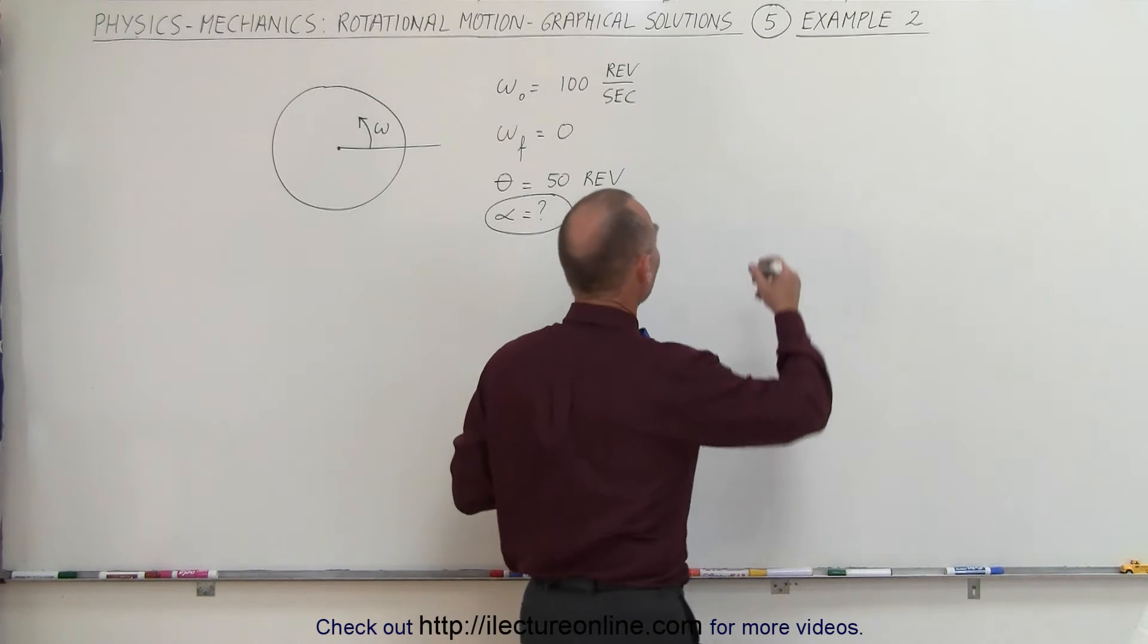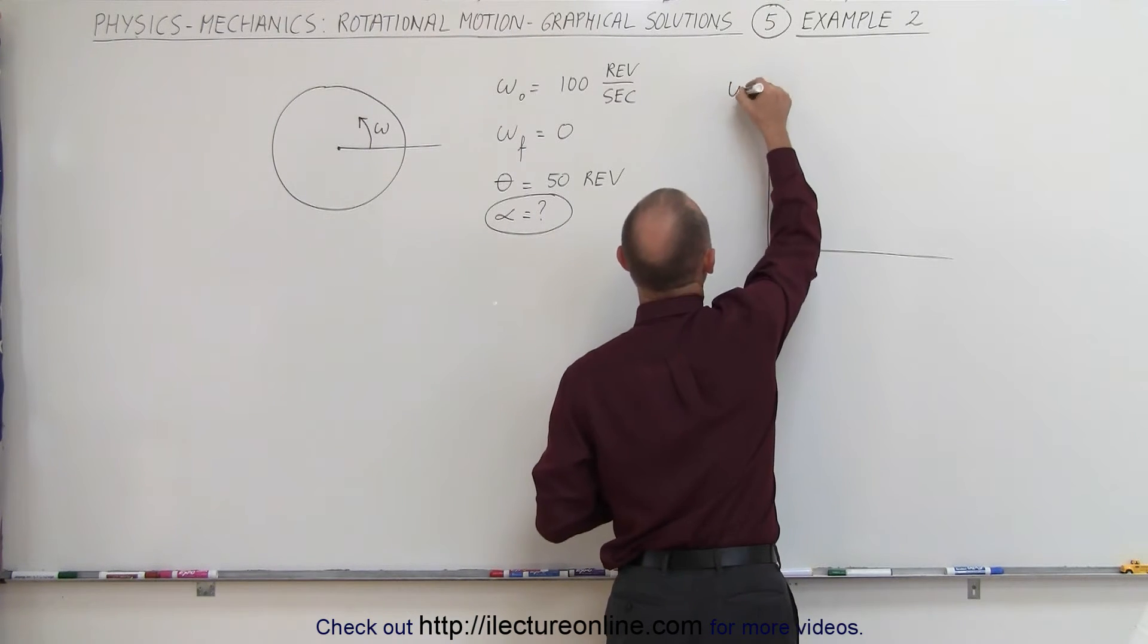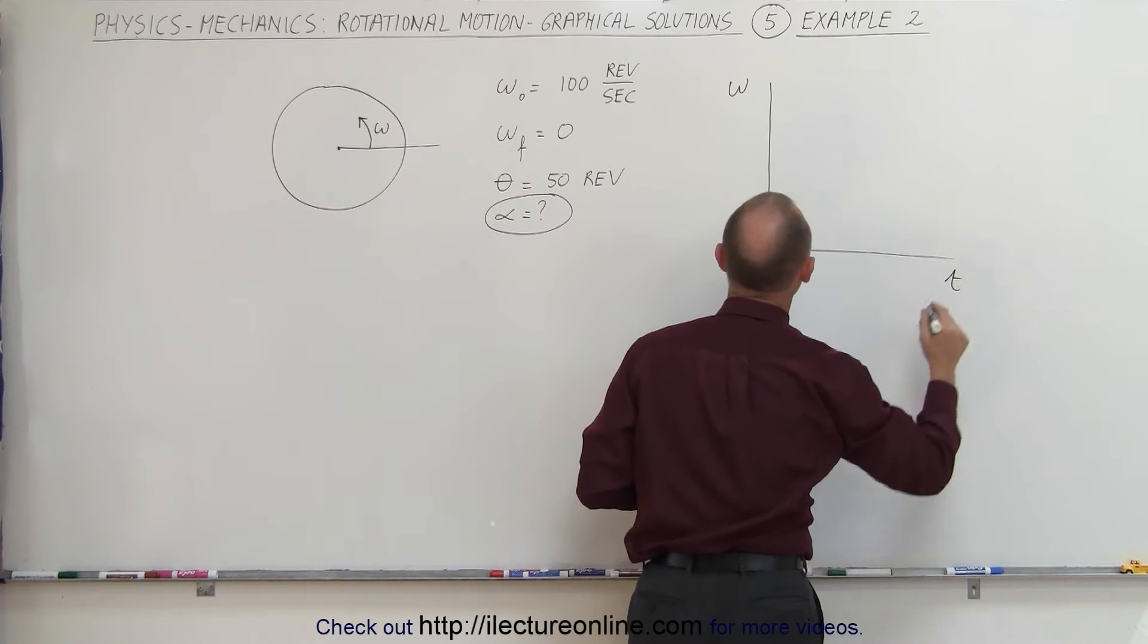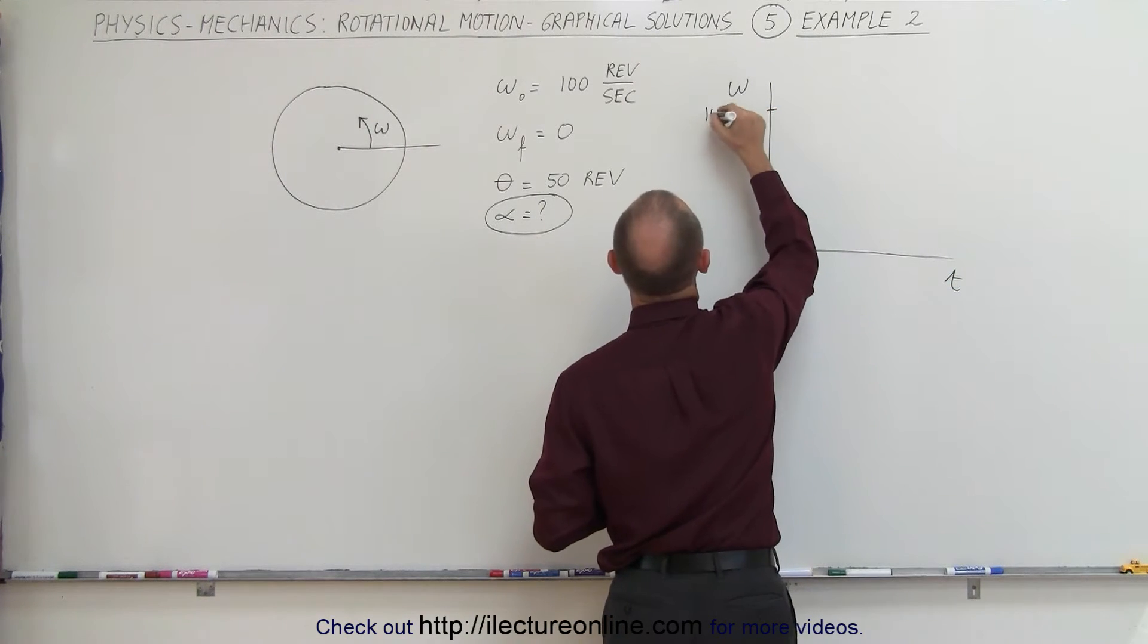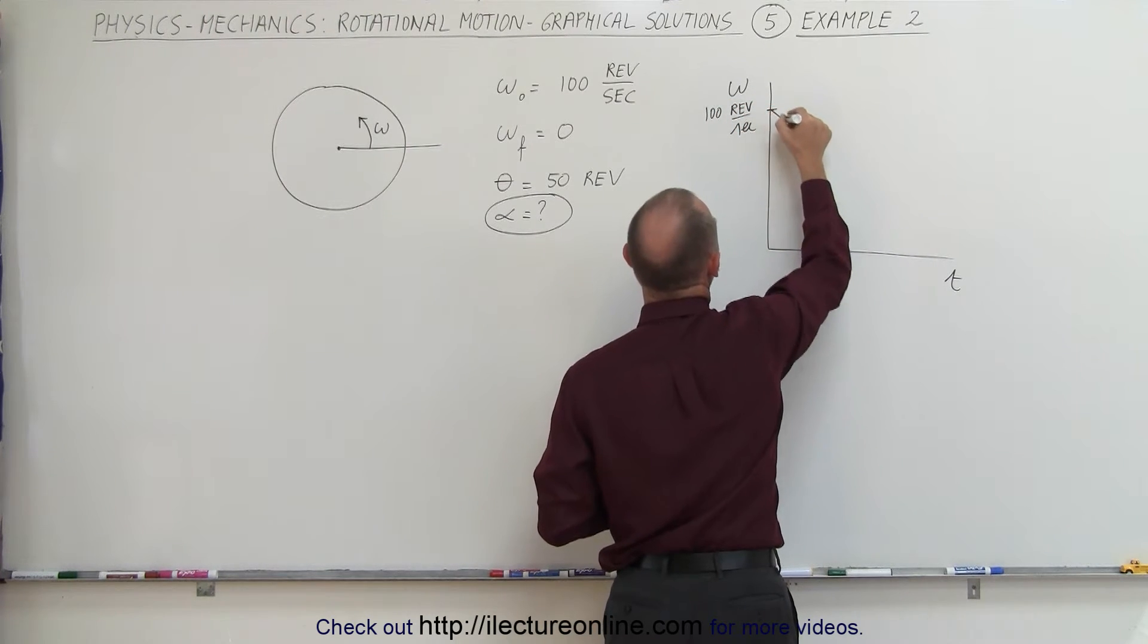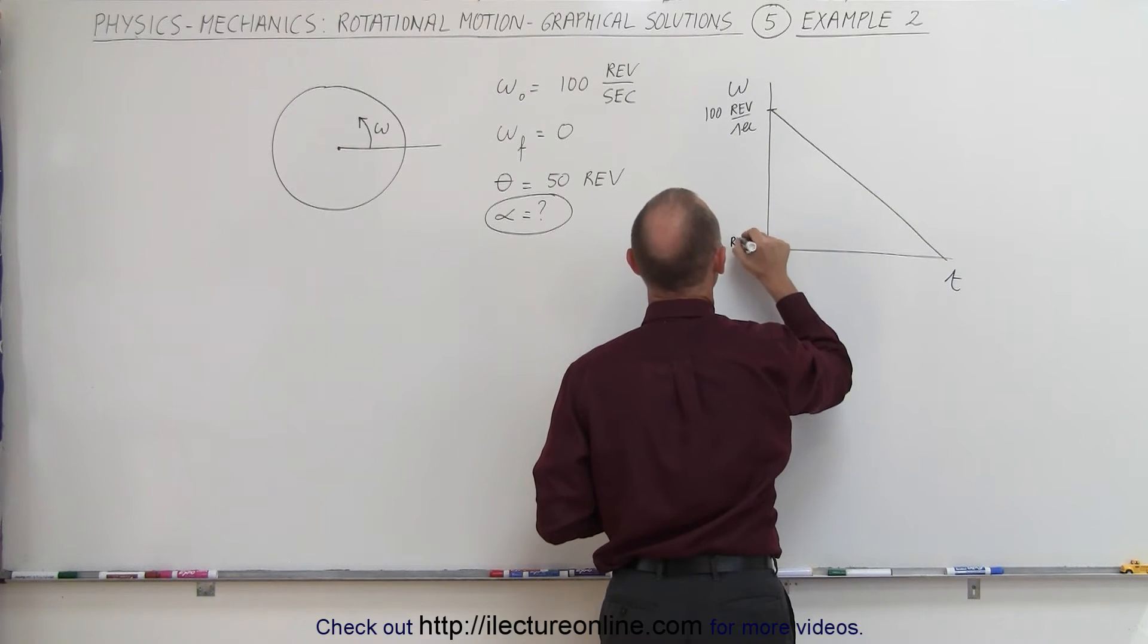Next we're going to draw a graph, and we like to start with the omega versus time graph. That's usually the best one to use. We have an initial omega of 100 revolutions per second, and notice that eventually the speed goes down to zero. So here we have zero revolutions per second.